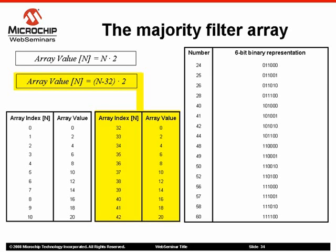These values are listed in order of appearance: 24, 25, 26, 28, 40, 41, 42, 44, 48, 49, 50, 52, 56, 57, 58, and 60. The values pointed to by these unique indexes are replaced by 1 to indicate that a true-to-false condition has occurred.